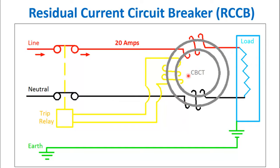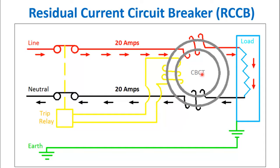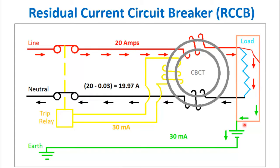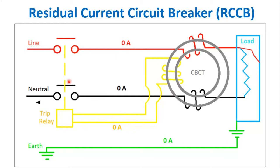The core balance CT works on the principle of residual current. Whenever the neutral and phase currents are equal, there is no residual current flowing in the winding. But when a fault occurs, the phase gets connected with the equipment body and current starts to flow from the phase through the body into the earth conductor. Now 19.97 amperes are flowing through the neutral, and the residual 30 milliampere current flows through the CBCT, which trips the relay and breaks the circuit, stopping the current.